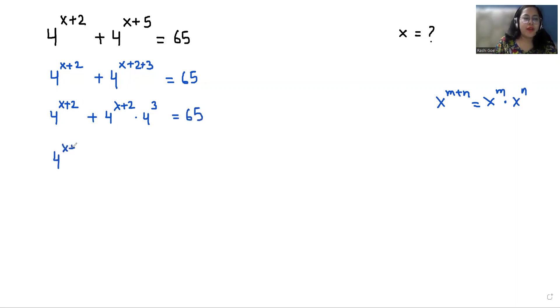Now I can take 4 power x plus 2 as common. So what is left? 1 plus 4 power 3 equals 65. 4 power x plus 2 times 1 plus 4 cube is 64 equals 65.